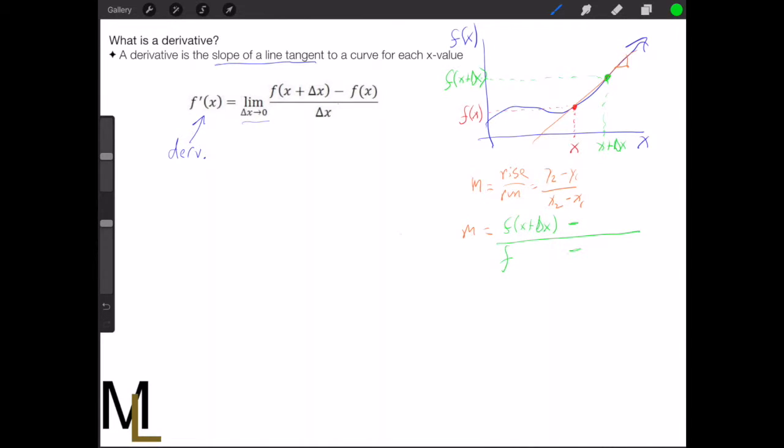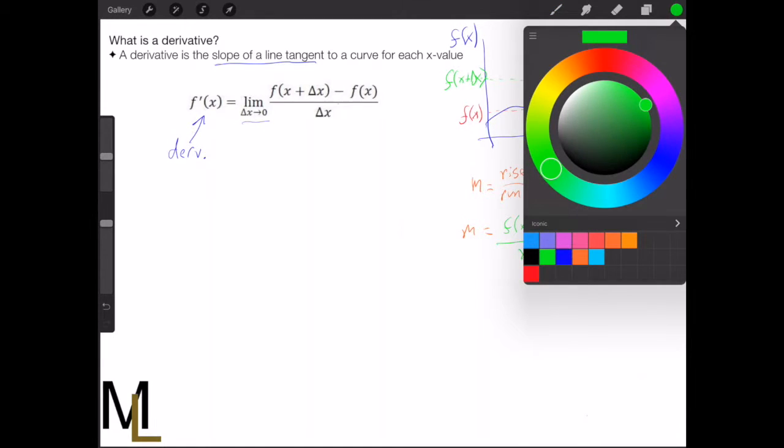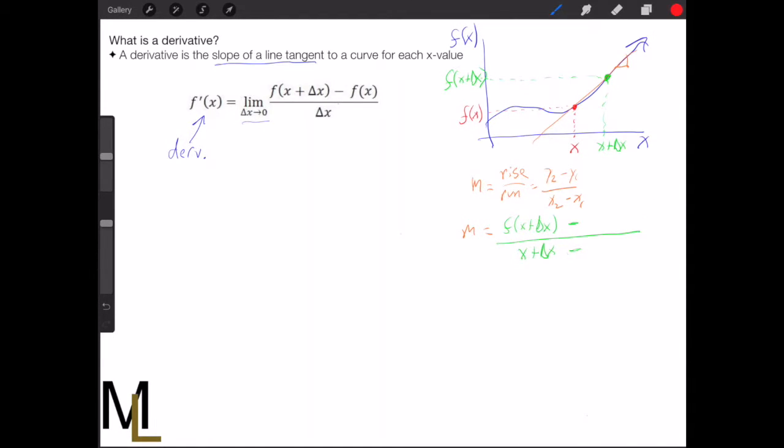We'll have f of x plus delta x here, right, because that's our y2 and our x2. And then for our y1 and x1, we're going to use x and f of x here. So that's f of x and x.